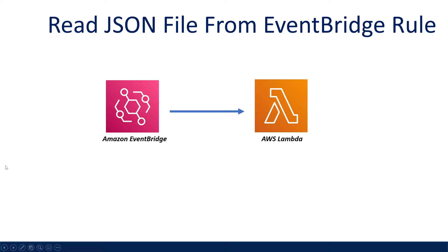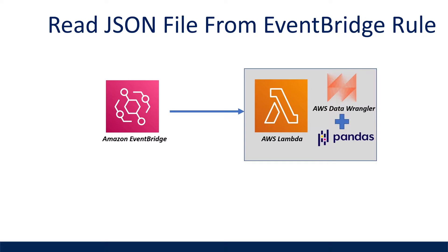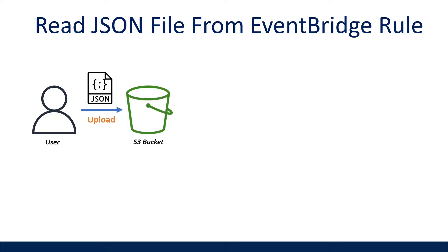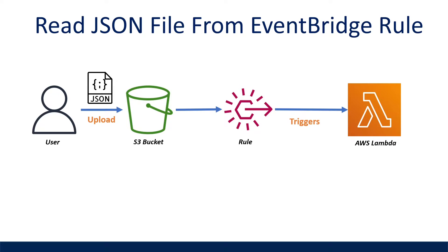This video is about how to read a JSON file in Python when a Lambda is triggered by an Amazon EventBridge rule. This walkthrough will use the Python library AWS Data Wrangler to read the JSON file into a pandas data frame in our Lambda function. I will show this using an event-driven and serverless example of when a user or application uploads a JSON file to an S3 bucket. This bucket has a CloudWatch rule configured so when a file is uploaded to it, it triggers the Lambda to read in that JSON file.